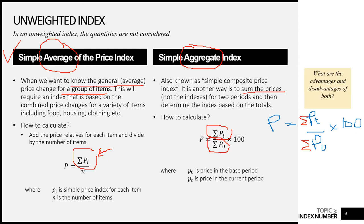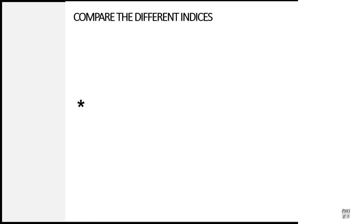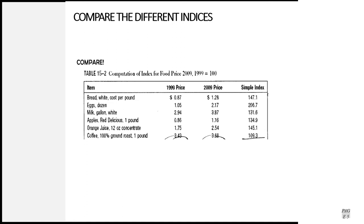There are advantages and disadvantages of this method — kindly read the textbook for more information. So far we have learned three different kinds of indexes: the simple price index, and two unweighted measures — the simple average of the price index and the simple aggregate index. Let's compare between these three.